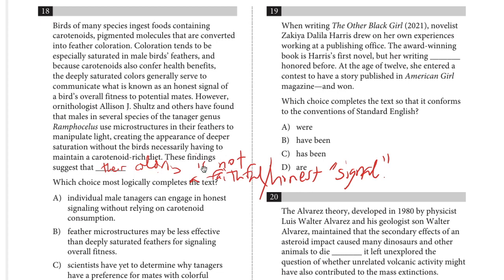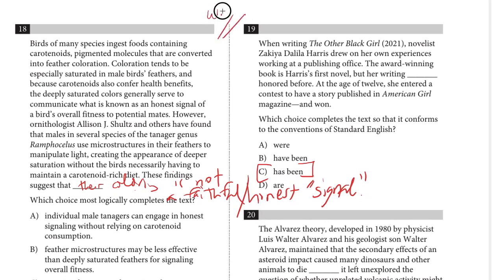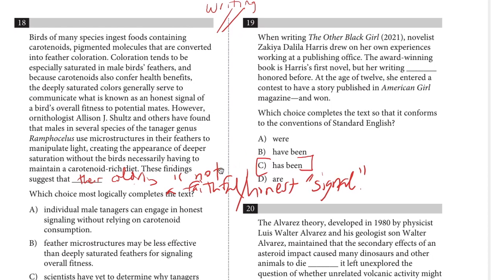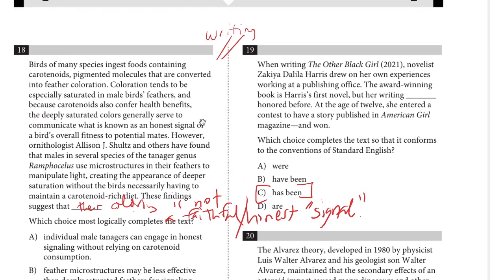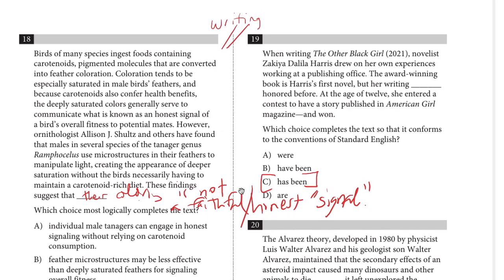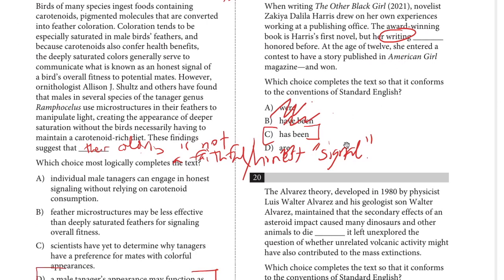Now we move into the writing section, similar to the writing portion of the current SAT. Question 19: the book is described as Harris's first novel, but 'her writing has been honored before.' We have a subject 'writing' — a singular gerund, like 'walking' or 'running.' All three incorrect options are plural. So we don't even need to get into verb tense; it's simply about subject-verb agreement, singular versus plural.